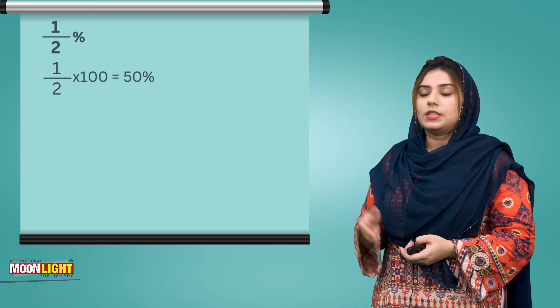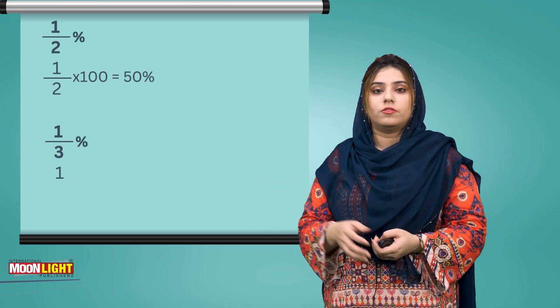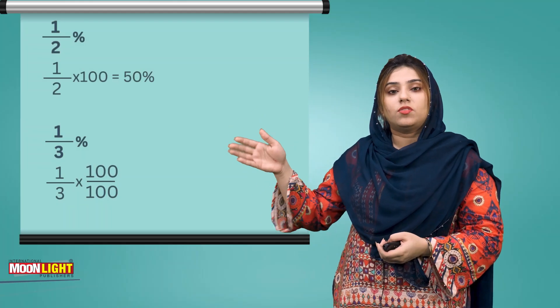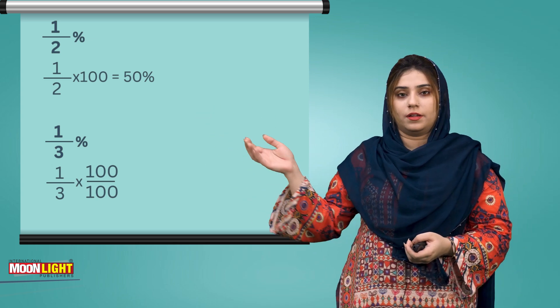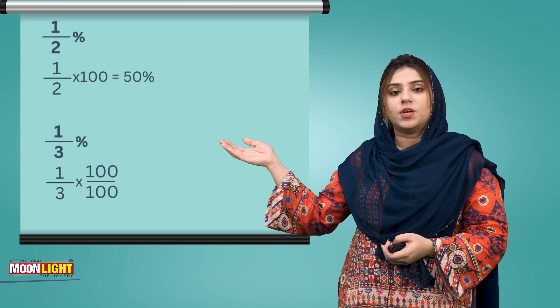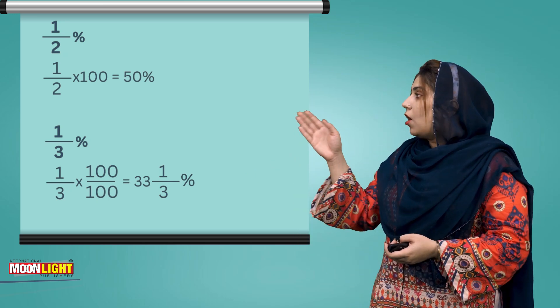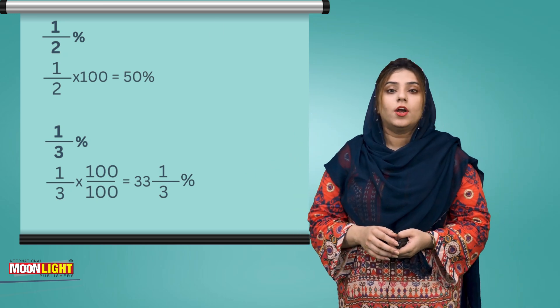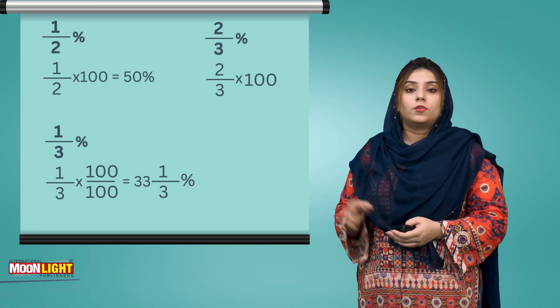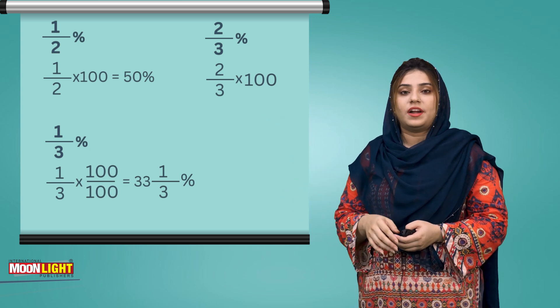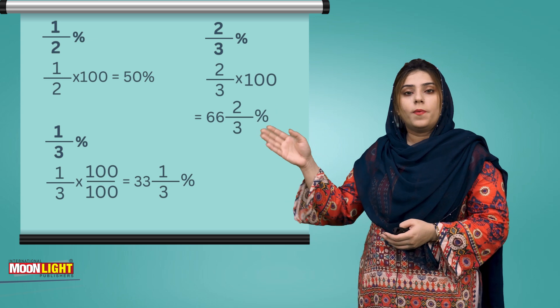Now next example is 2 by 3. In this you can do 2 by 3 times 100, multiply and divide, and you have the answer that will be 66 whole 2 by 3 percent.